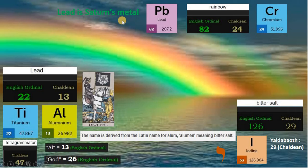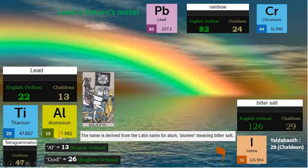Lead is 22 in English ordinal, matching element titanium, with an atomic mass of 47, like the Tetragrammaton. Lead is 13 in Chaldean, matching the Death tarot card. Saturn is said to devour his children. 13 is also element aluminium, which has an atomic mass of 26. 26 is God in English ordinal.